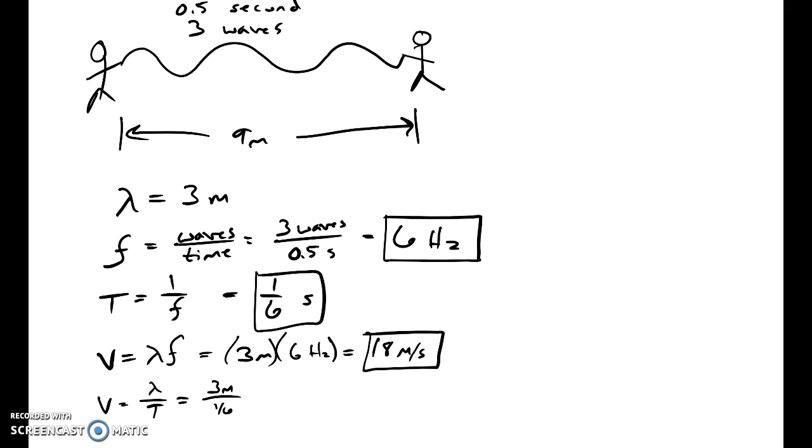So frequency, how many waves per time? Period would be the inverse of that, reciprocal of that, 1 sixth, the time per wave. Wavelength is the distance between peaks, so that's only 3 meters from peak to peak, since there's three of them that go across 9 meters. Three waves in 9 meters, that means one wave is only 3 meters. And velocity is wavelength times frequency, or wavelength divided by time.